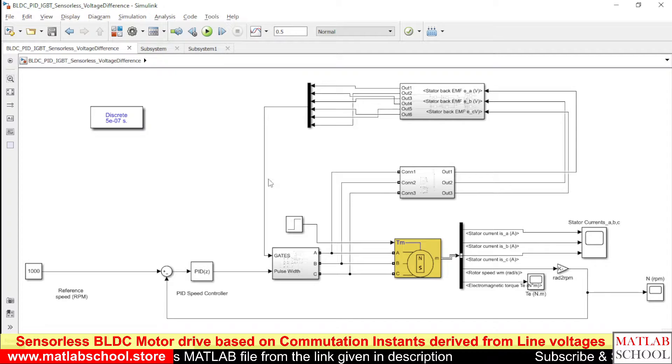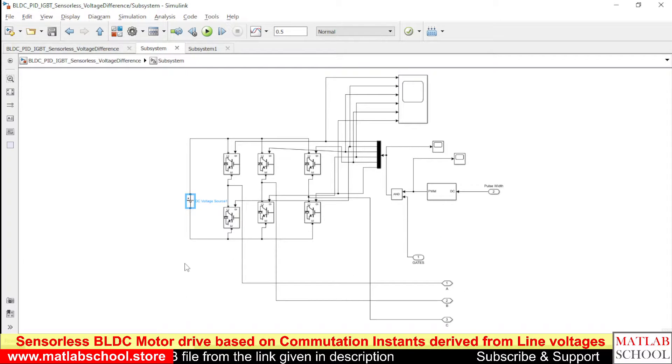And these gates are given as input to the gate terminals of the switches, to all the six switches. So we are getting the details of the rotor position as well as the difference of speed. So based on these two things, we are switching the corresponding phases.